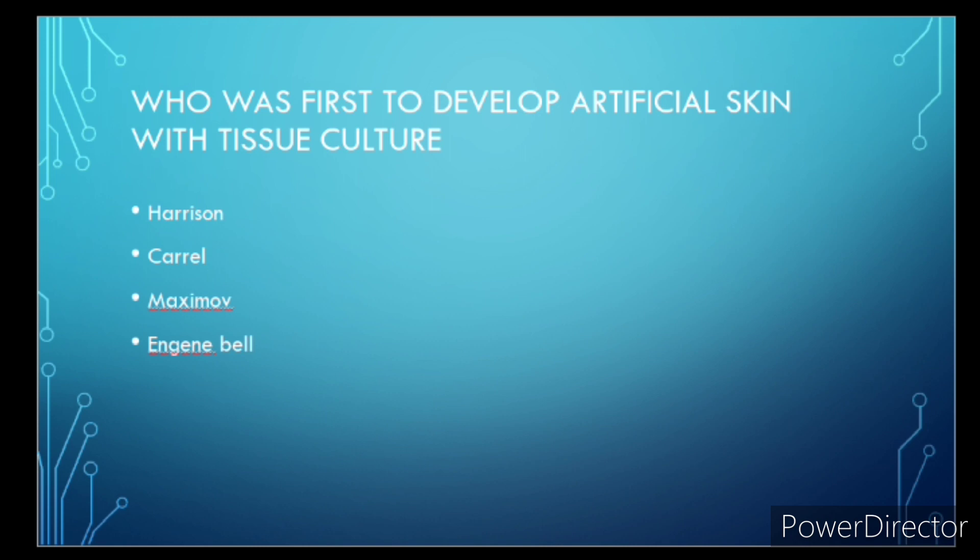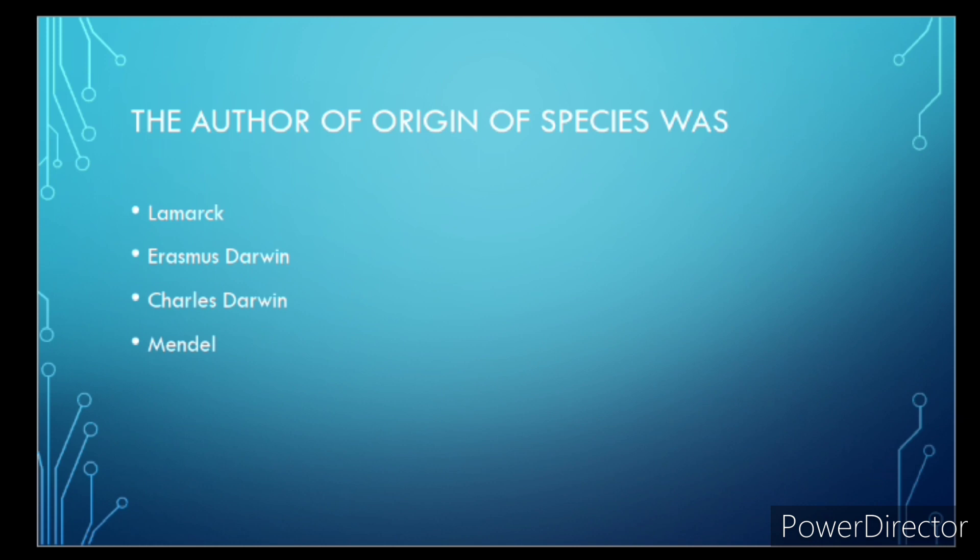Project Tiger in India was launched in? Who was first to develop artificial skin with tissue culture? The correct answer is option first, Harrison.